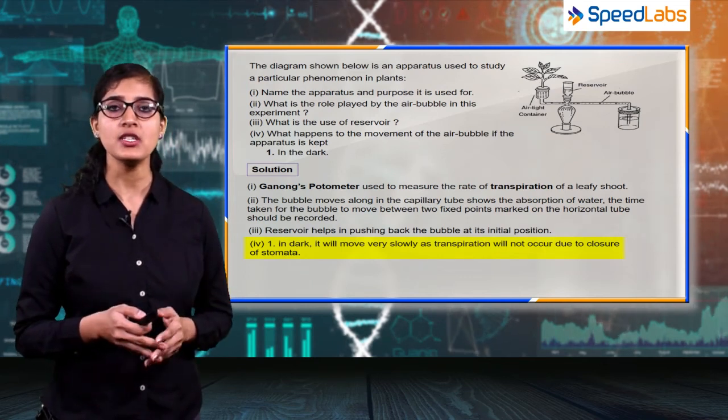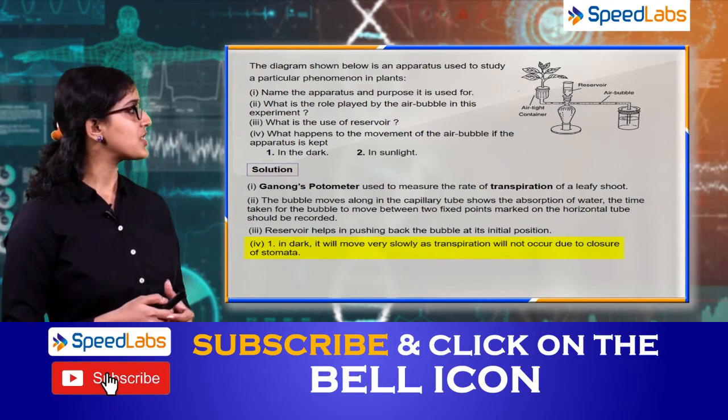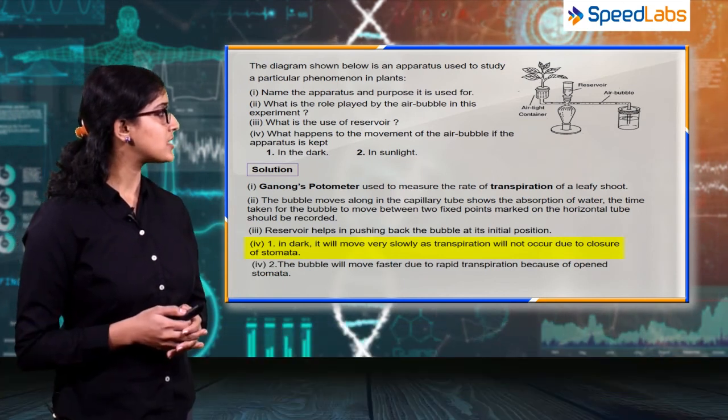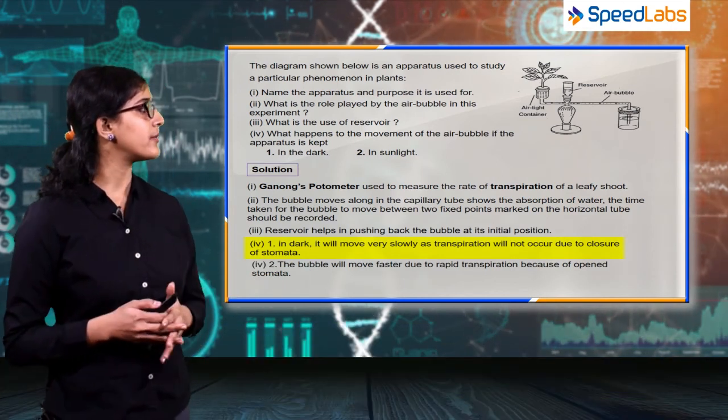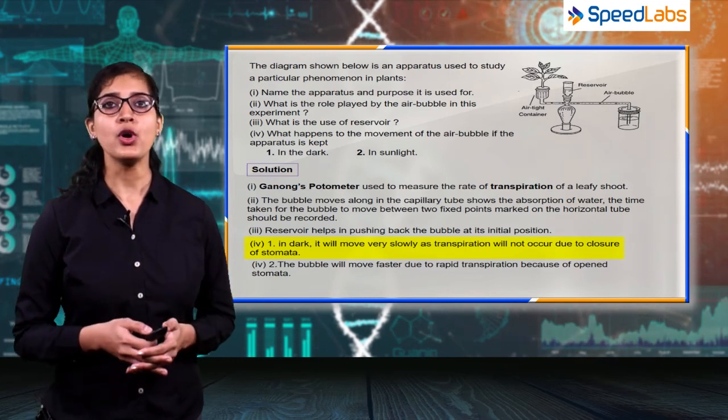The next condition is in sunlight. In sunlight, the bubble will move faster due to rapid transpiration because of open stomata for inward diffusion of carbon dioxide.